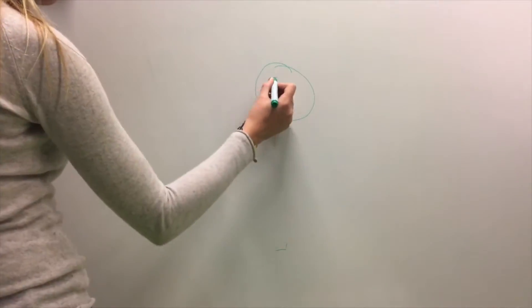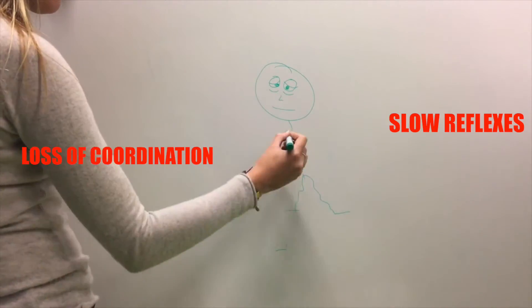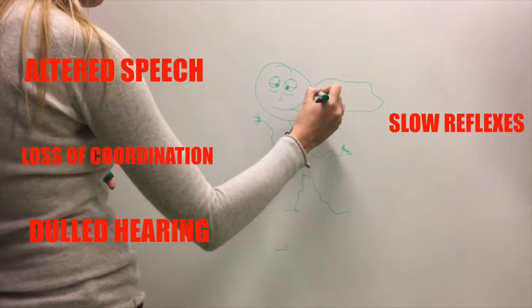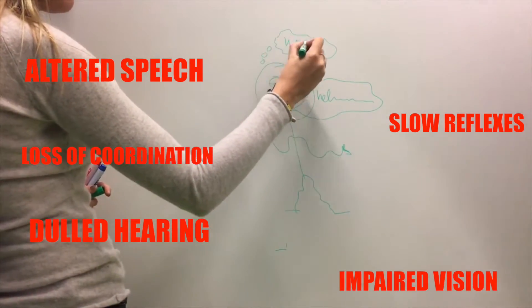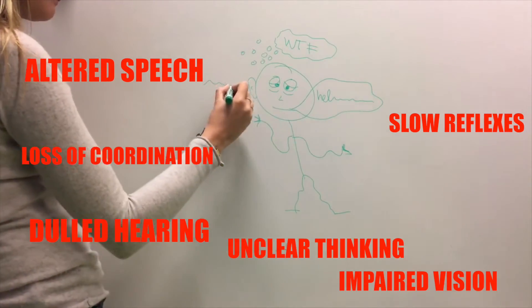A slow information flow can lead to a loss of coordination, slowed reflexes, altered speech, dulled hearing, impaired vision, and makes it harder to think clearly.